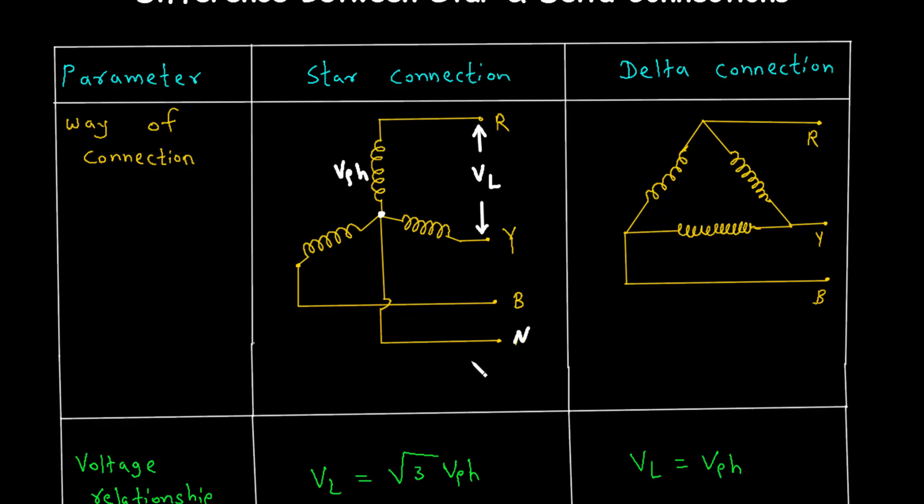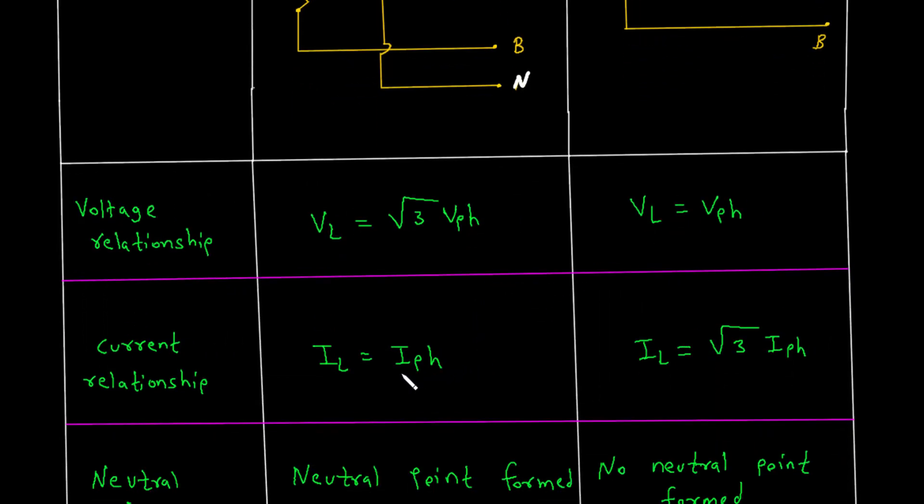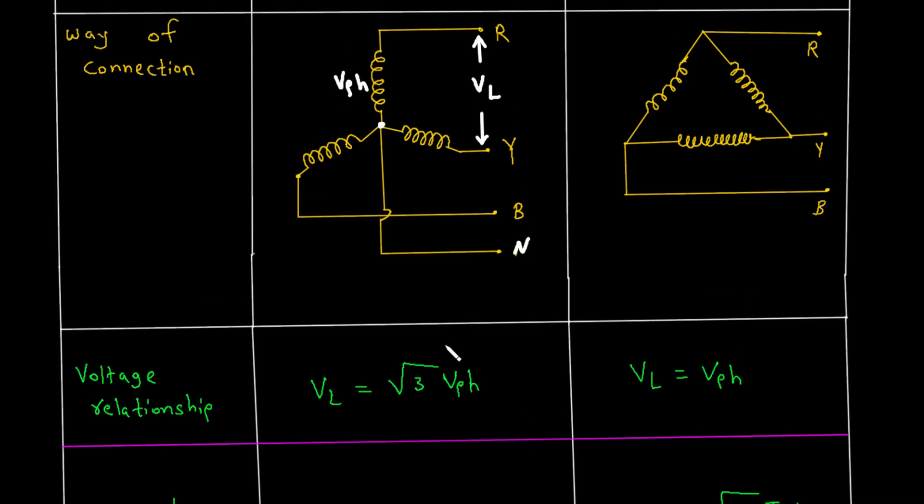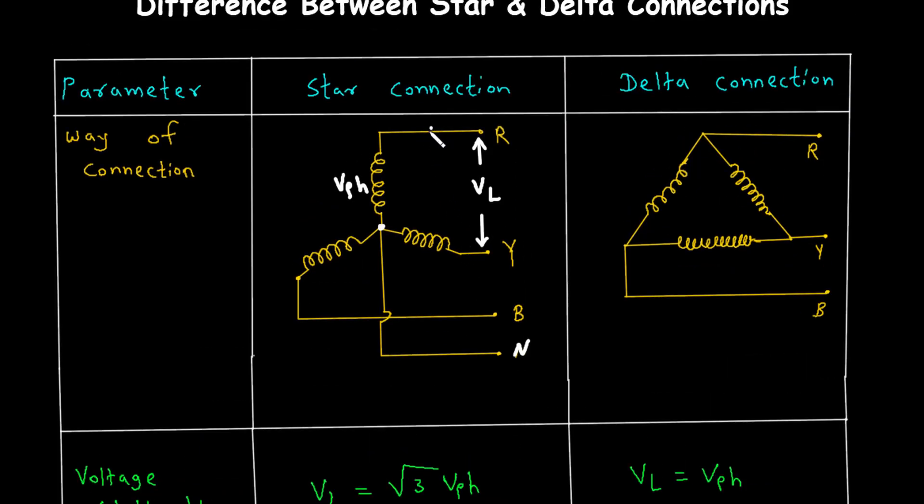Now, let's talk about the current in a star connection. The current flowing through each line, called the line current and denoted as I underscore L, is the same as the current flowing through each phase winding, which is the phase current, denoted as I underscore pH. In other words, I underscore L equals I underscore pH.